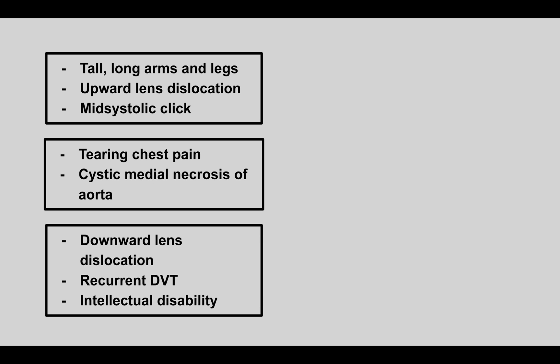The next condition: a patient with long arms and legs, very tall stature, upward lens dislocation, and a mid-systolic click. This is Marfan syndrome, which occurs due to a fibrillin gene mutation. The mid-systolic click is due to mitral valve prolapse.